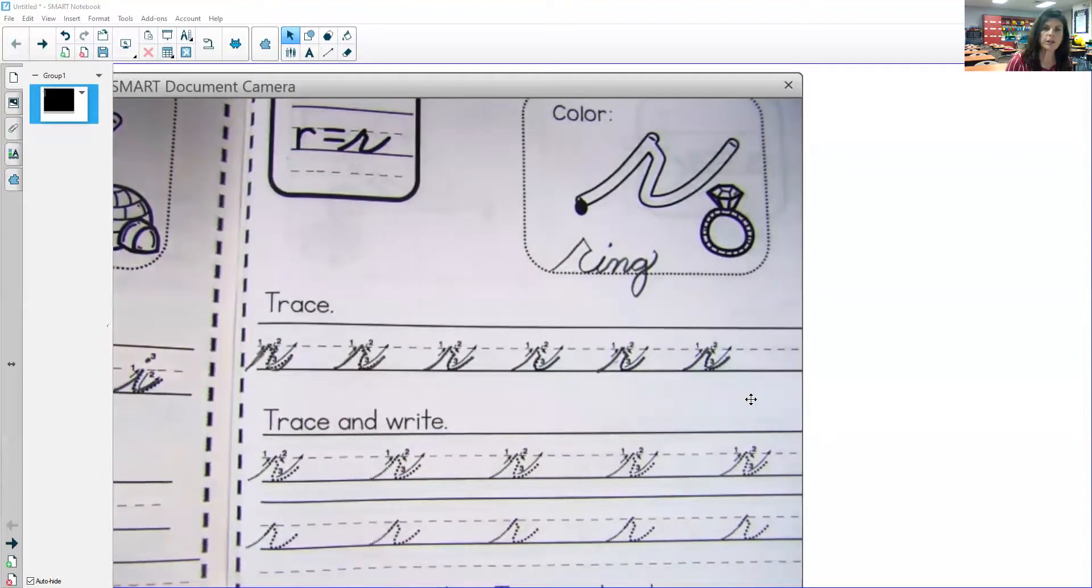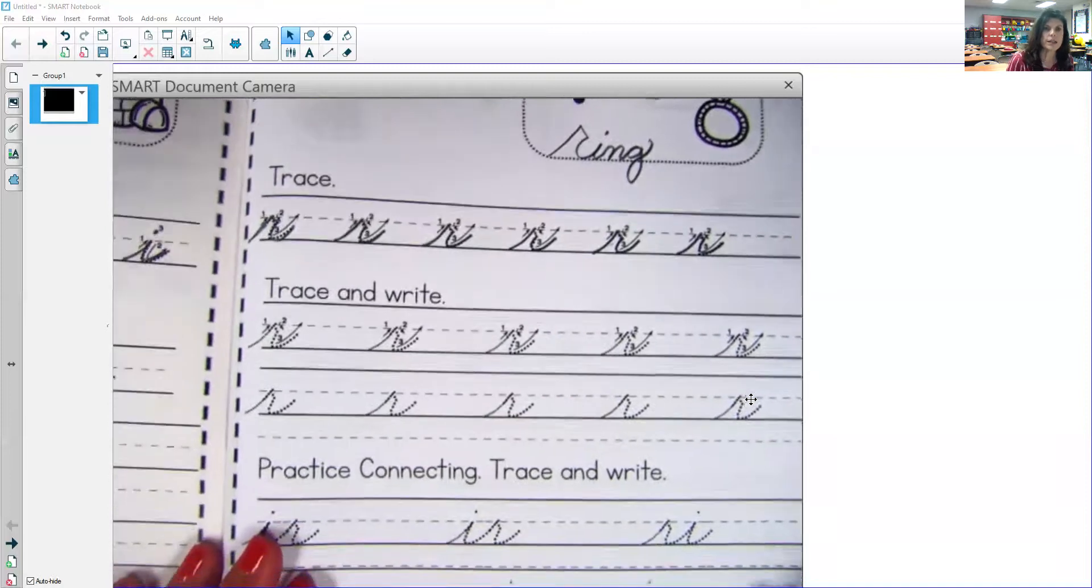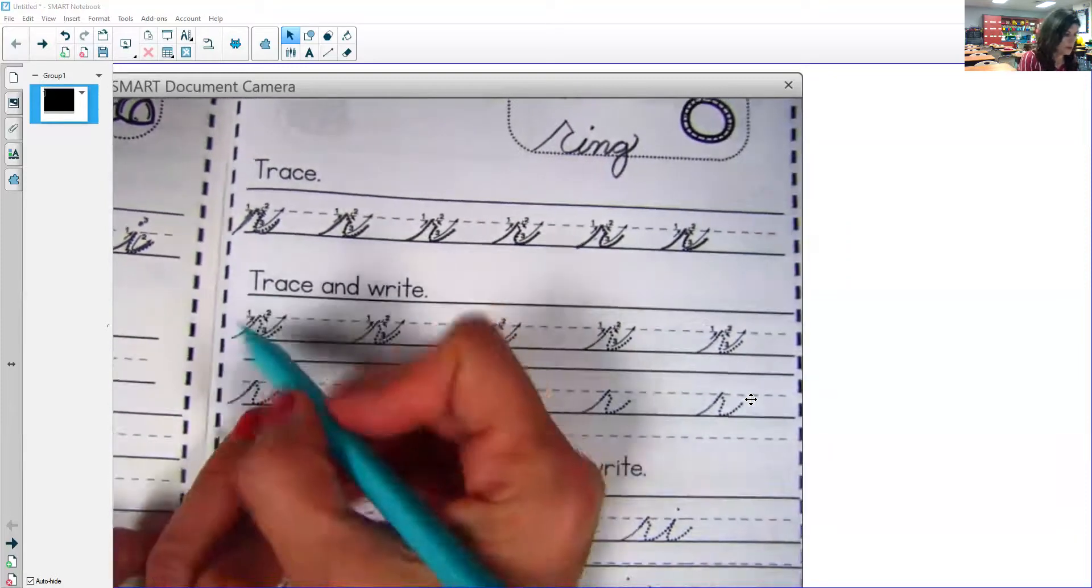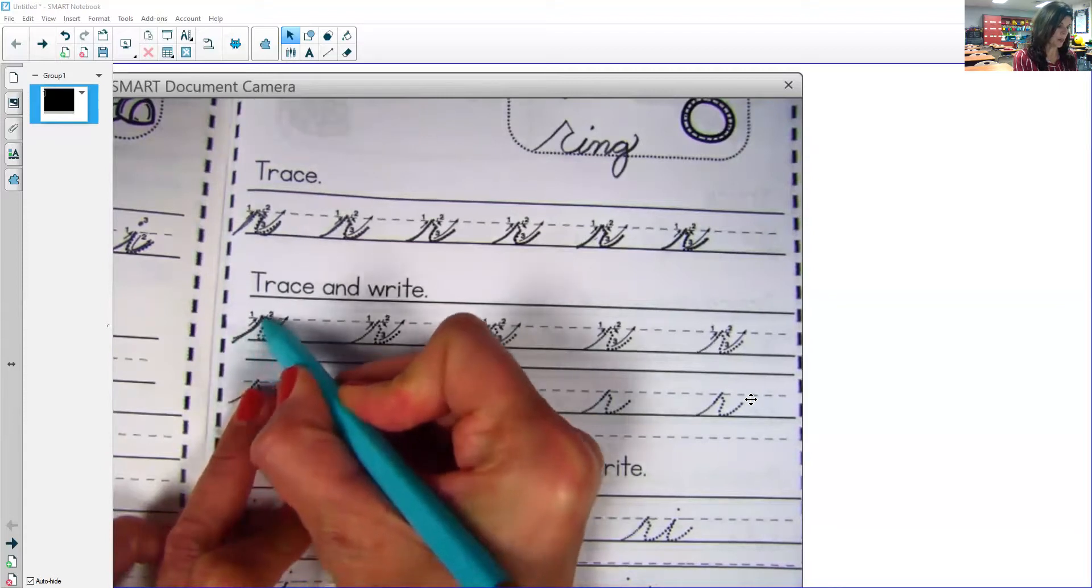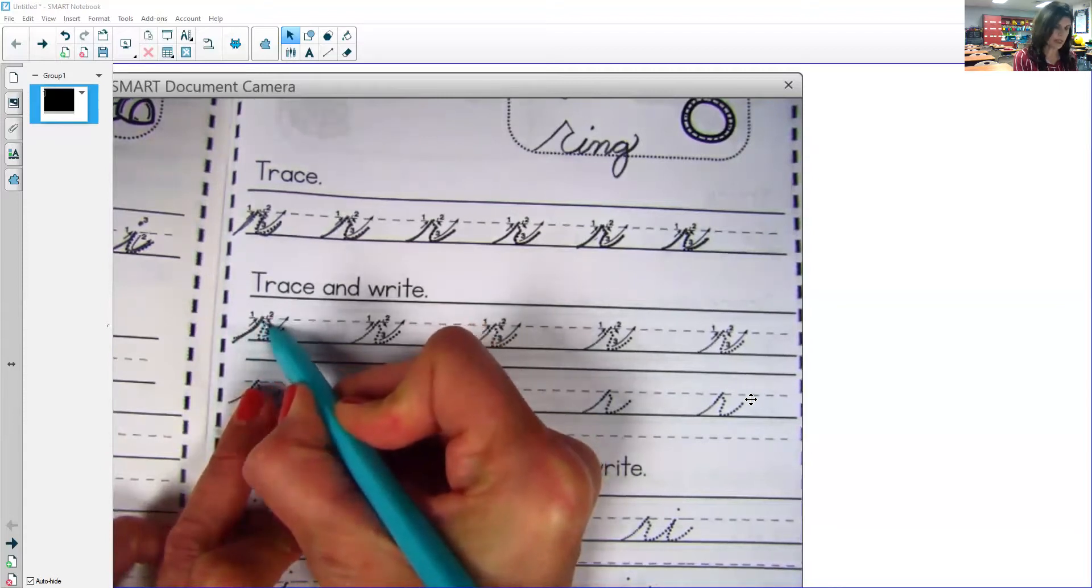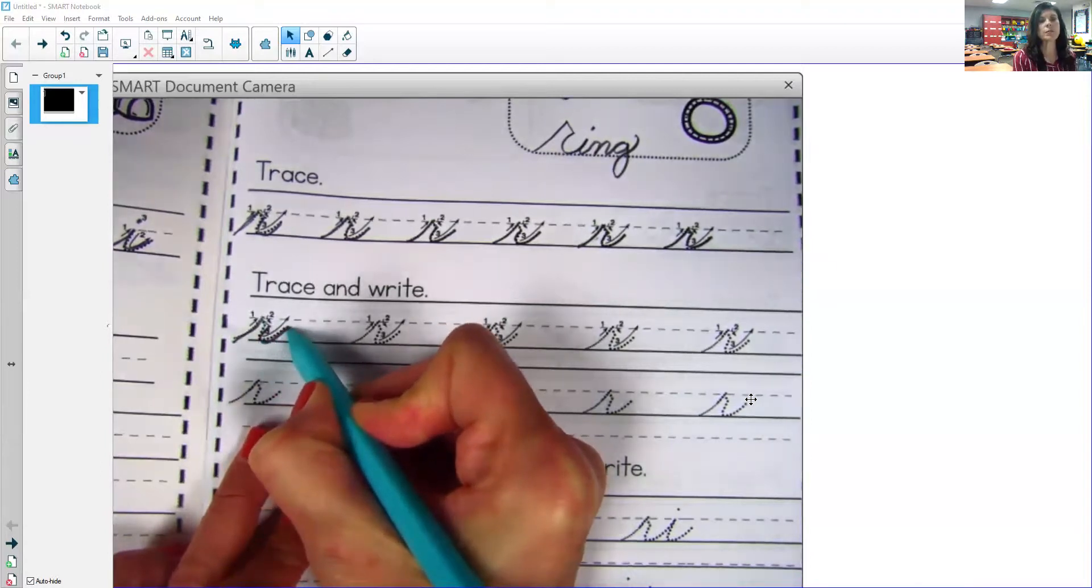Okay, look at your R's. I hope you did a good job. All right, trace and write section two. Once again, step one, start at the baseline, go up and touch the middle line. Step two, slant down, come down and go up on step three.